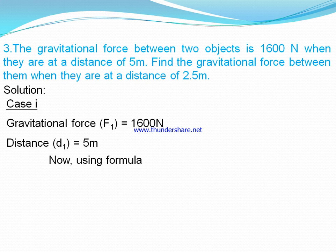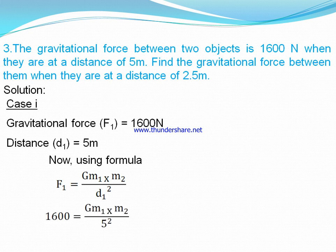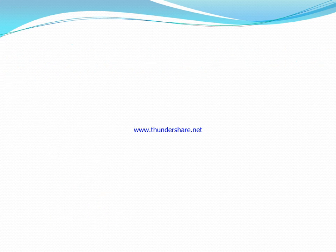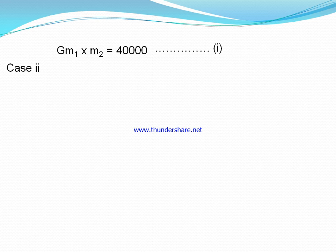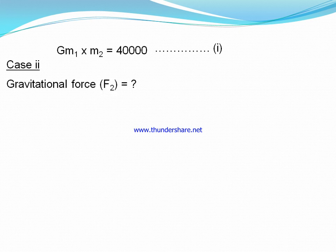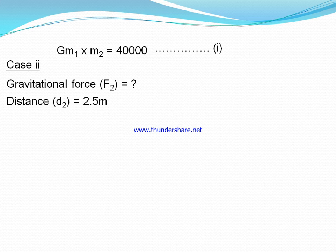Using the formula for Case 1: F1 = G·m1·m2 / d1². Substituting the value, the expression becomes G·m1·m2 / 25 — call this Equation 1. For Case 2, the gravitational force F2 is to be calculated and the distance d2 = 2.5 m. Using the formula for Case 2: F2 = G·m1·m2 / d2².